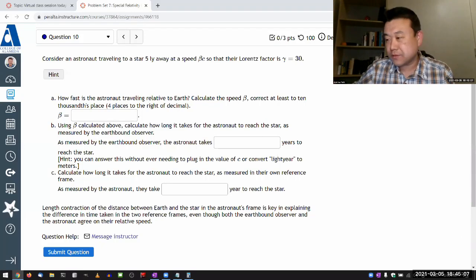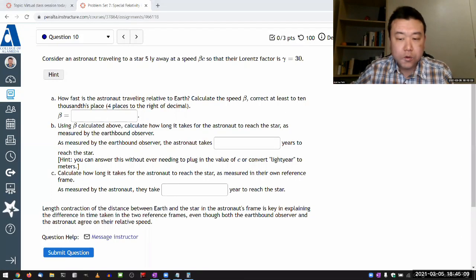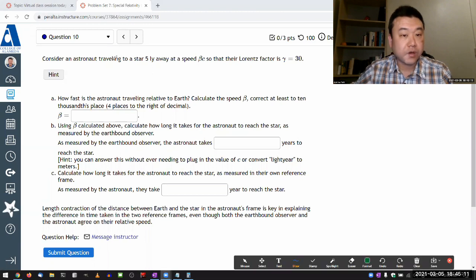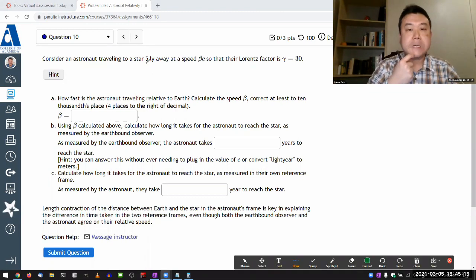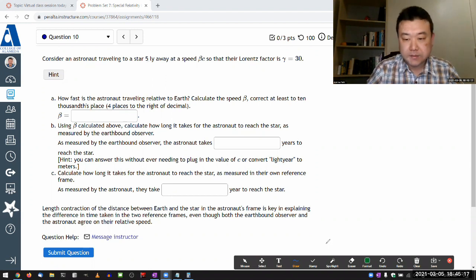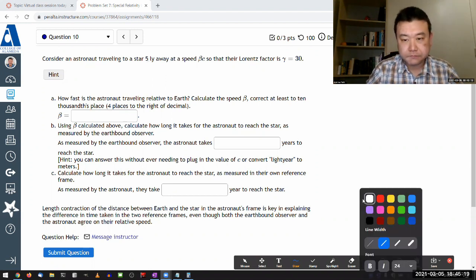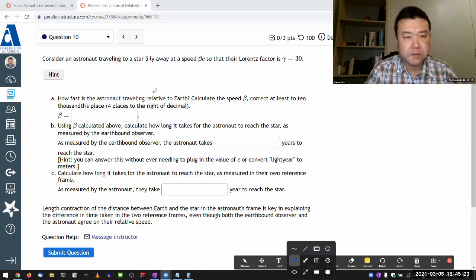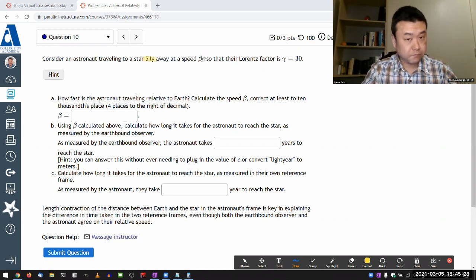So, the question says, considering an astronaut traveling to a star some distance away. Let me just highlight it as potentially important information - five light years away, at a speed of beta, so that their Lorentz factor is gamma equals 30.